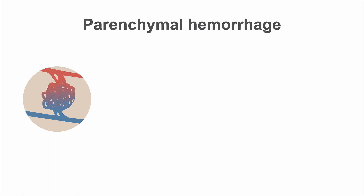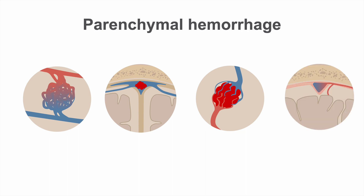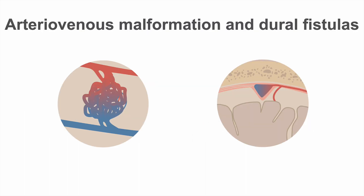In patients who present with parenchymal hemorrhage without subarachnoid hemorrhage, you should first consider the possibility of an underlying arteriovenous malformation, venous occlusion, cavernoma, or dural fistula. The enlarged blood vessels that supply an arteriovenous malformation or dural fistula, because they are usually on the surface of the brain, can be mistaken for subarachnoid blood on non-contrast CT.